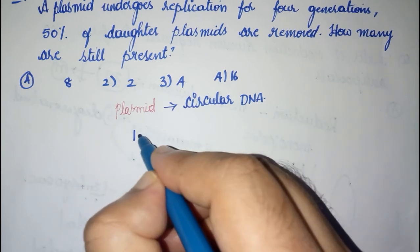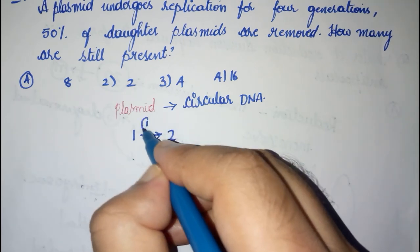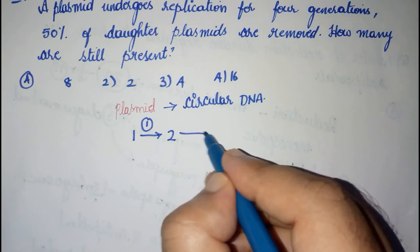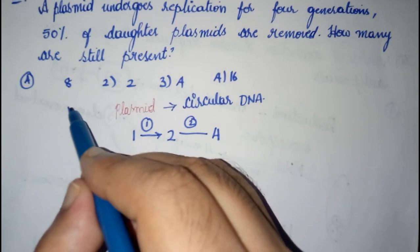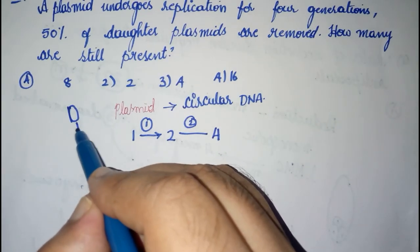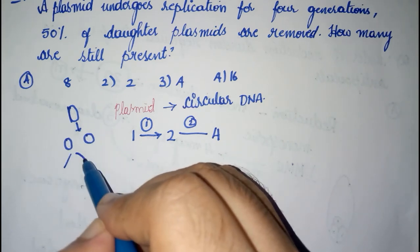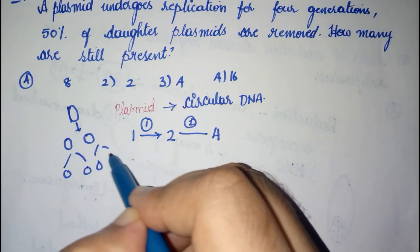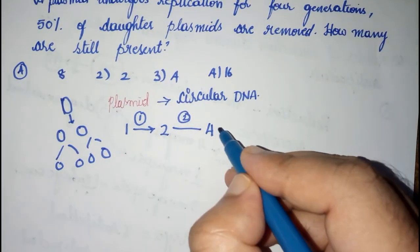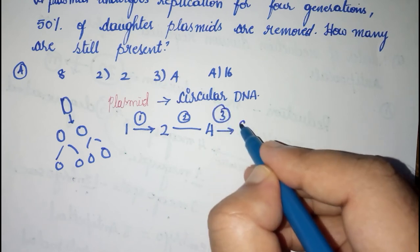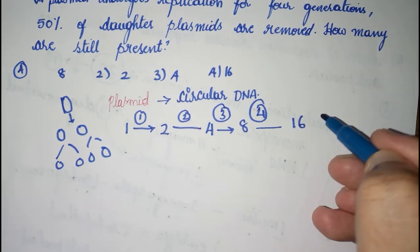Let us start with one plasmid. After one generation of replication it becomes two plasmids. After the second generation, two plasmids become four. After the third generation, four plasmids become eight. And in the fourth generation of replication, it becomes sixteen plasmids.